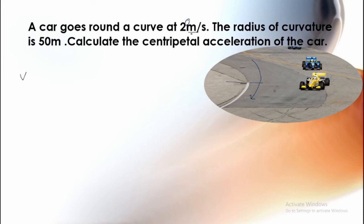We have given velocity. Velocity is equal to 20 meters per second. Radius of curvature is equal to 50 meters. And we have to find centripetal acceleration.